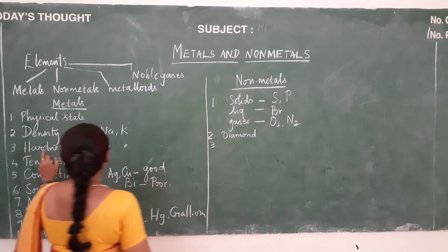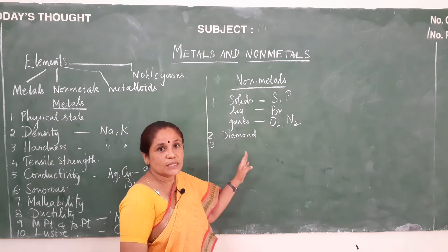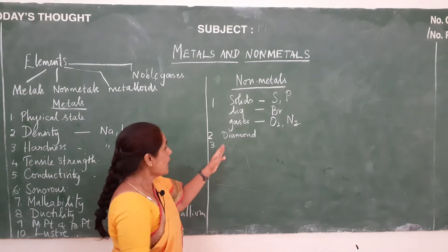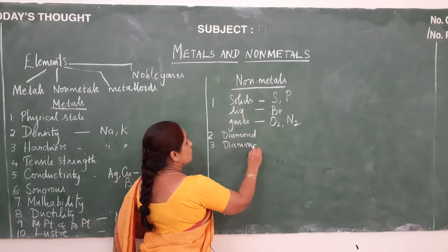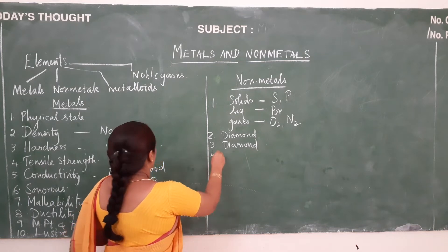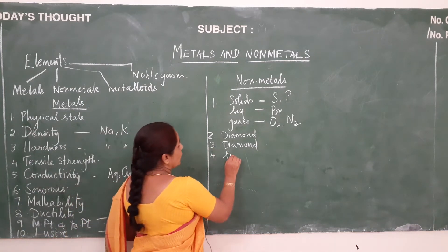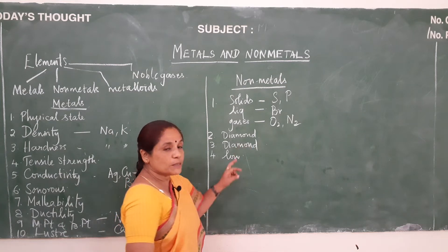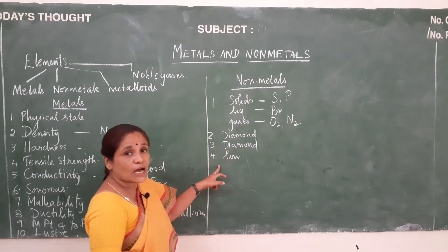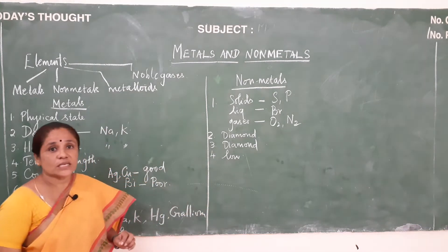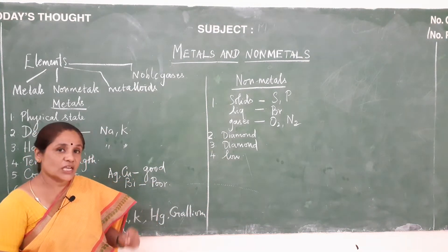The next property is hardness. All nonmetals possess low hardness — that means they are very soft. There is an exception: diamond is very hard. Tensile strength: nonmetals have low tensile strength. Exception is there for carbon fibres, which have very high tensile strength — so that they could be compared even to a steel fibre.